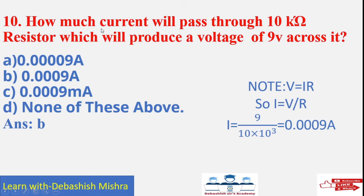Question number 10. How much current will pass through 10 kilo ohm resistor which will produce a voltage of 9 volt across? So, what are the things are given? 10 kilo ohm that is your resistance is given. 9 volt is voltage is given. We have to calculate the current I. So, we have the formula V is equals to IR. So, I is equals to V by R. So, I is equals to V is 9. R is 10 into 10 to the power 3. Because 10 kilo ohm is there. You have to convert it to ohm. Because volt is there. So, we have to convert it to ohm. So, it will be in ampere. So, it is 0.0009 ampere. So, what is the answer? Answer B is the correct answer. 0.0009 ampere. Answer B is the correct answer.